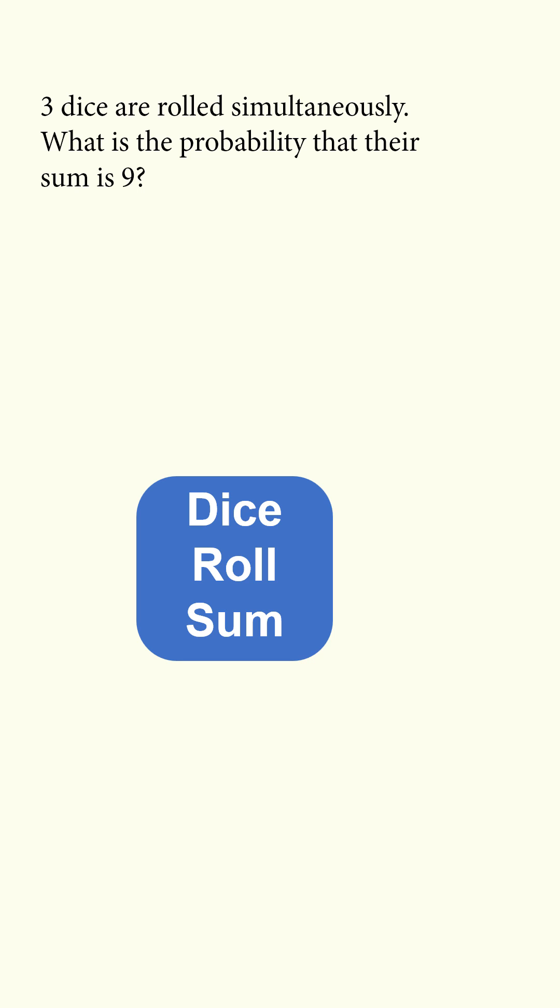Three dice are rolled simultaneously. What is the probability that their sum is equal to 9?